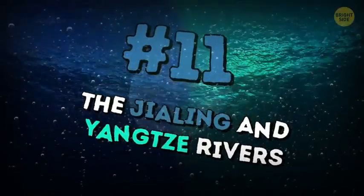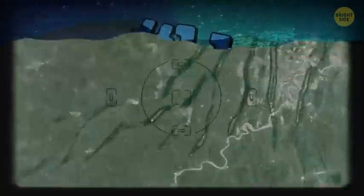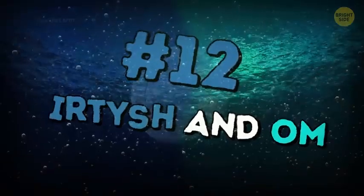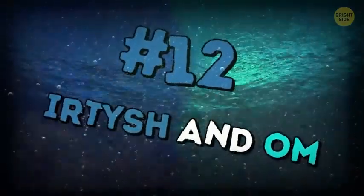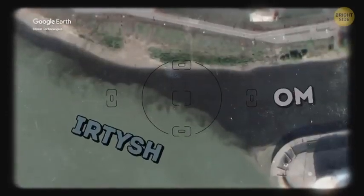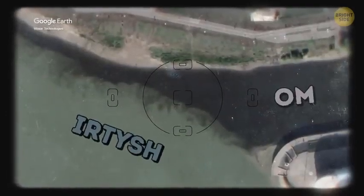The Jaling and Yangtze Rivers meet in Chongguin, China. The Jaling is clean, and the Yangtze is brown. Irtush and Ulm. These two rivers flow into each other in Ulmsk, Russia. The Irtush is cloudy and the Ulm, pure and transparent.